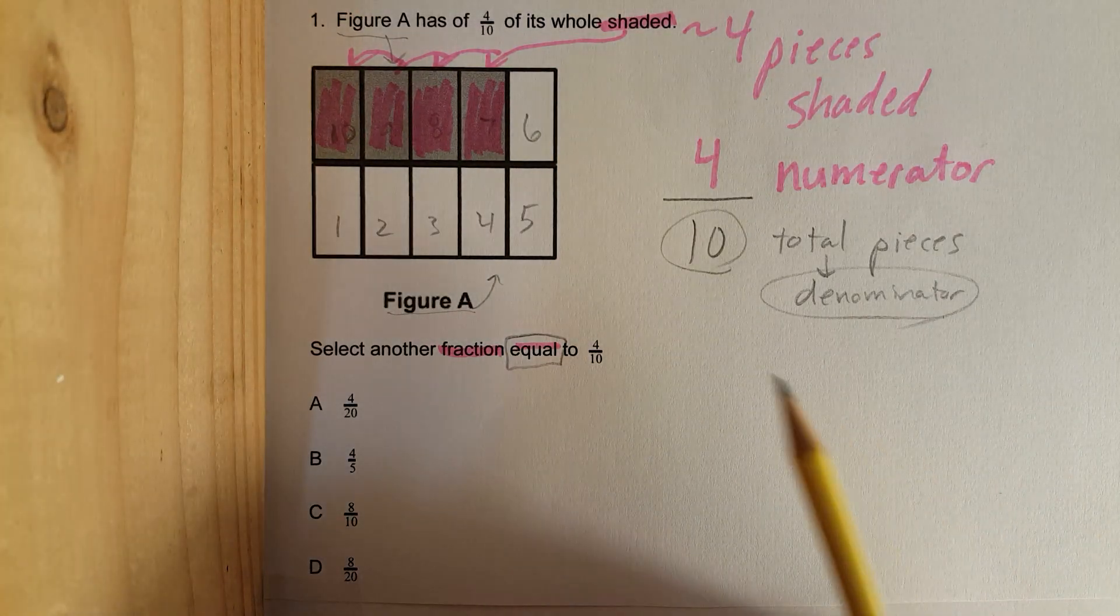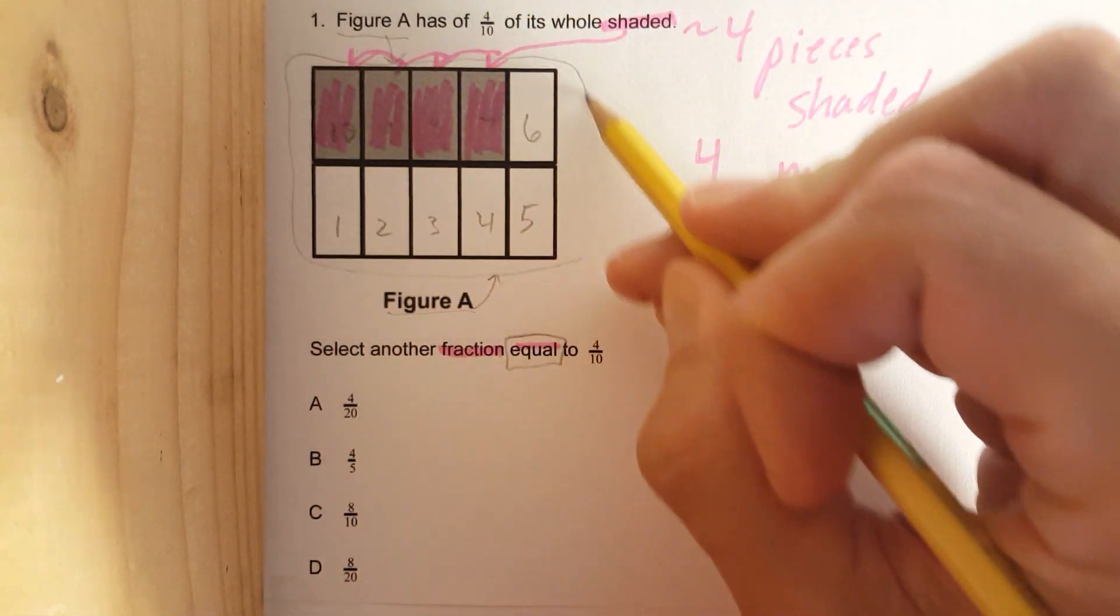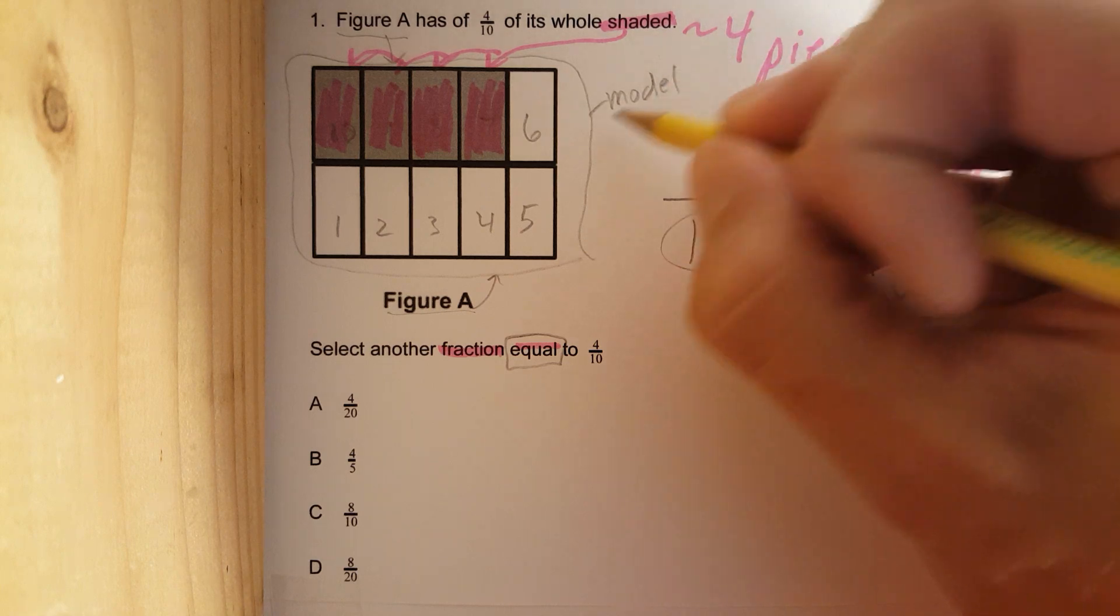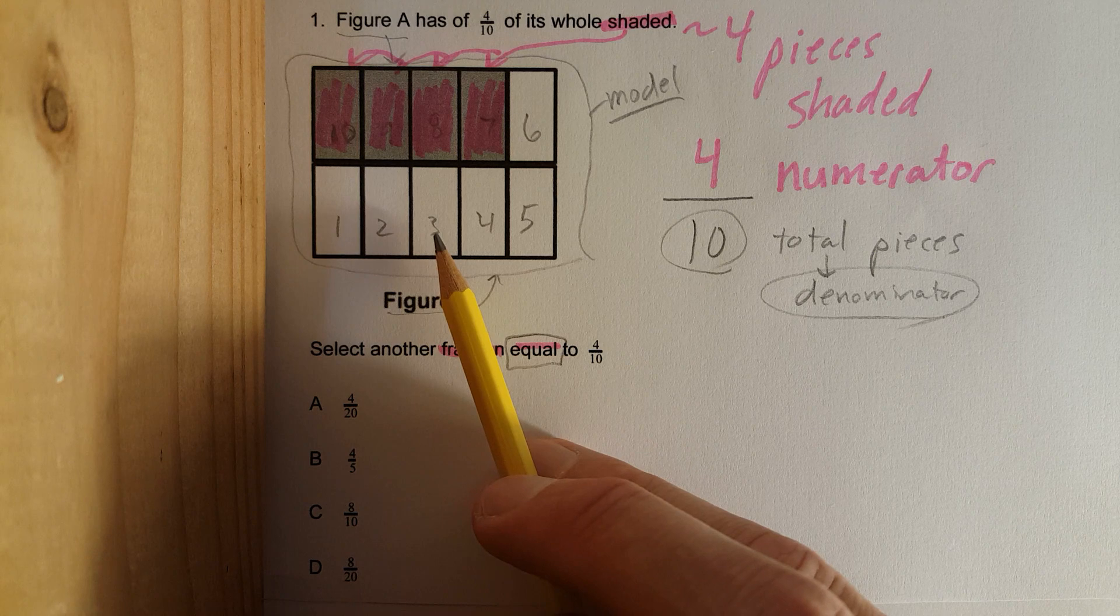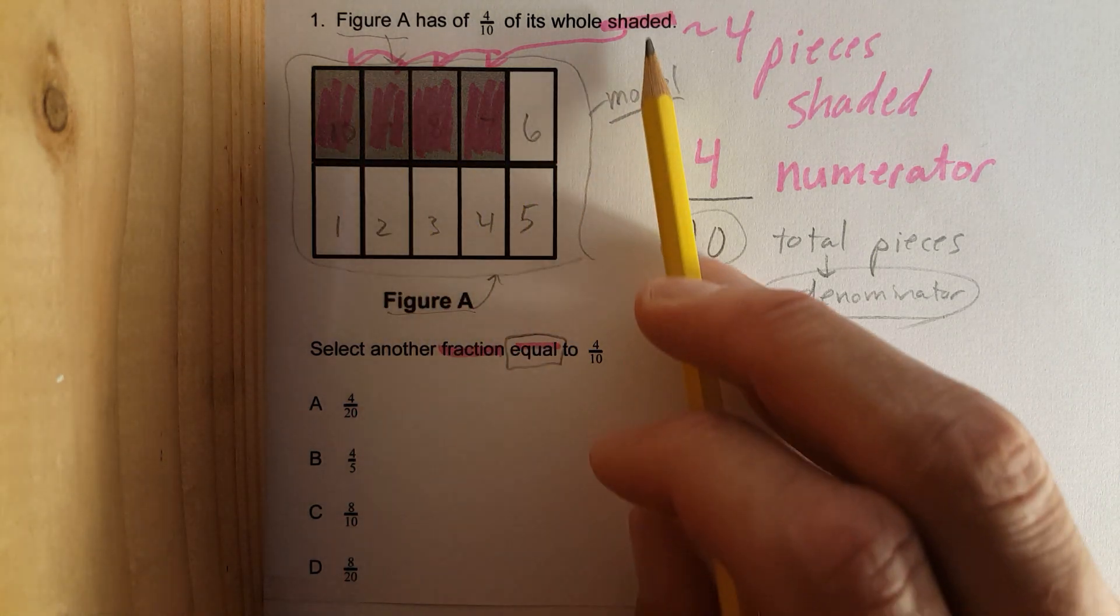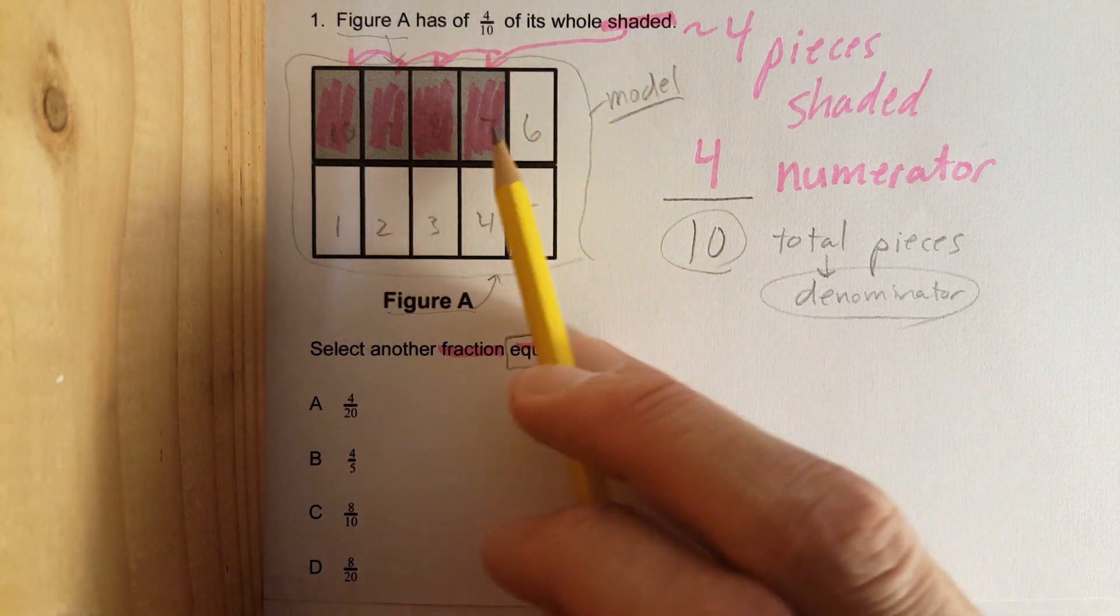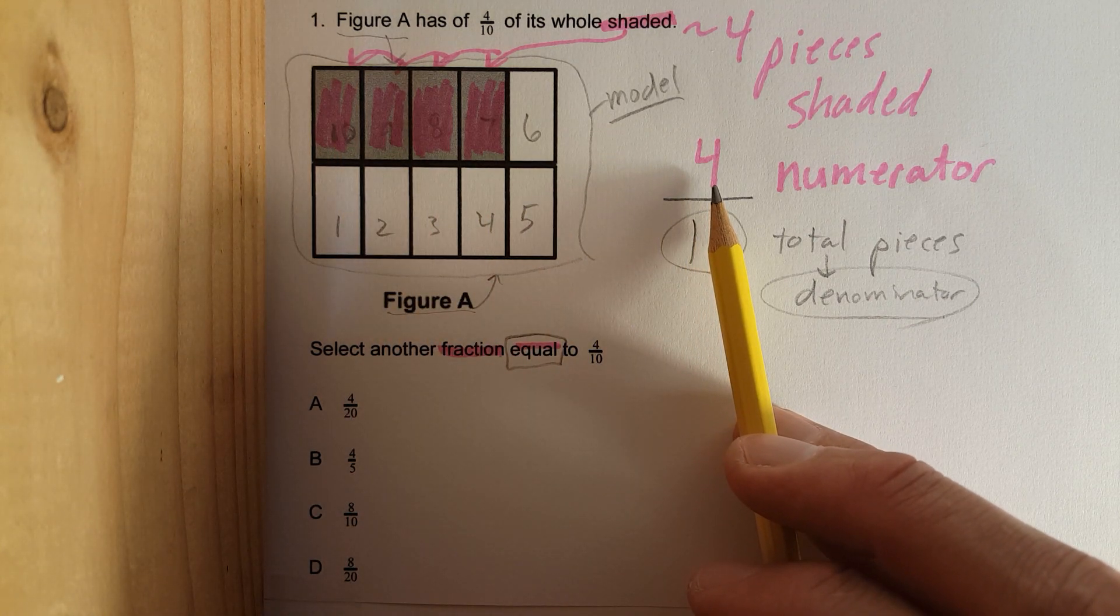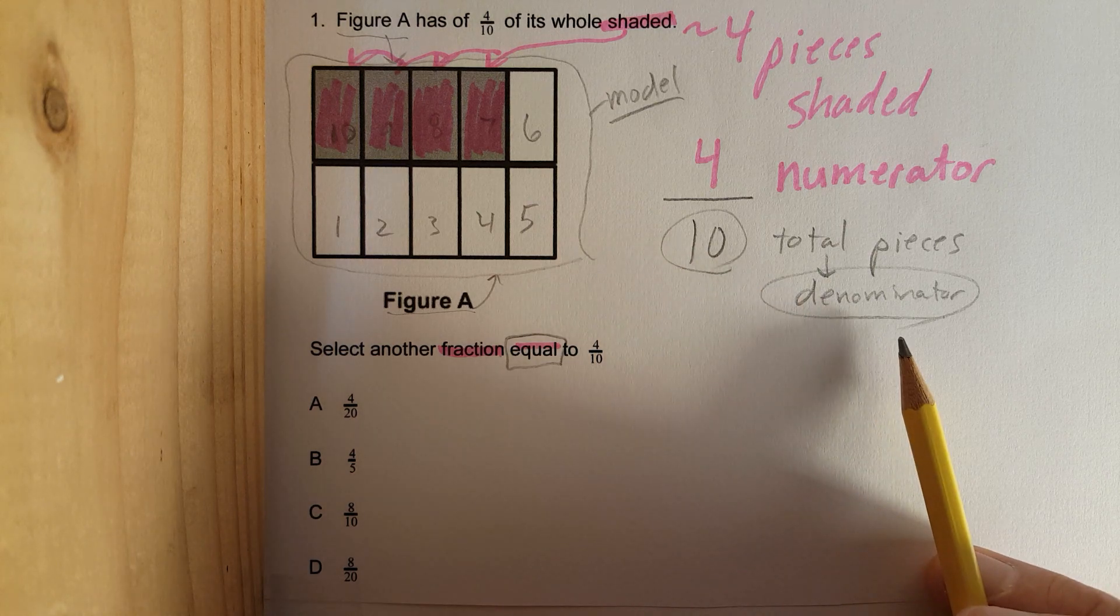So, let's review. This entire model has 10 total pieces. 1, 2, 3, 4, 5, 6, 7, 8, 9, 10. The problem states, 4 tenths of its whole is shaded. Here's the shaded parts. There's the 4. The 4 is known as the numerator. The 10 is known as the denominator. Okay?